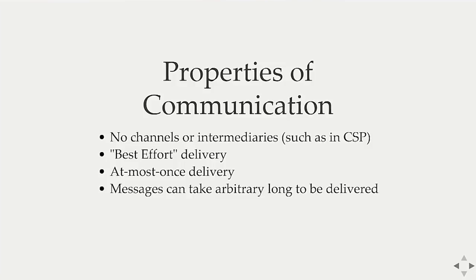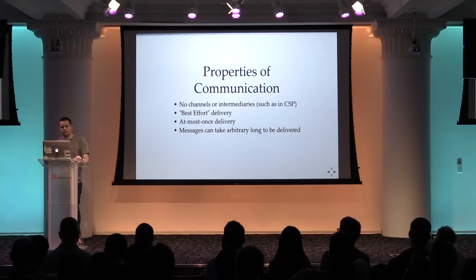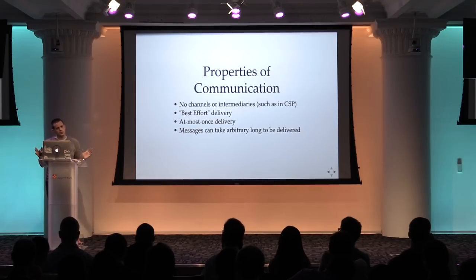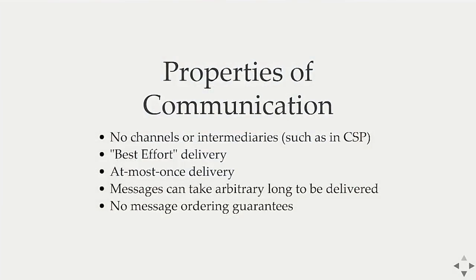Messages can take arbitrarily long to be delivered because the actor model in the theoretical sense has no concept of time — there is no timeout. If a message gets routed halfway around the world to reach a server in the same rack due to DNS issues, theoretically that's acceptable. And because of best-effort delivery and no timeouts, there are no message ordering guarantees — we don't track where messages went.